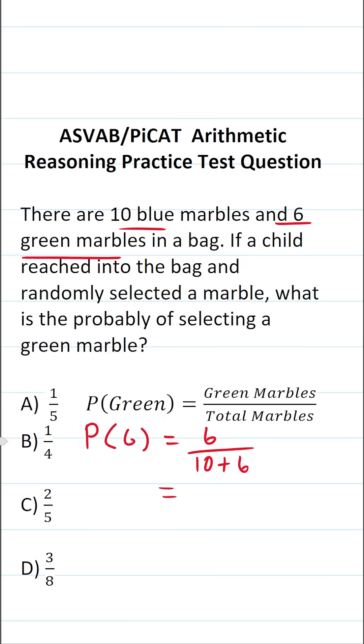So the probability of selecting a green marble is going to be 6 over 10 plus 6, which is 16.